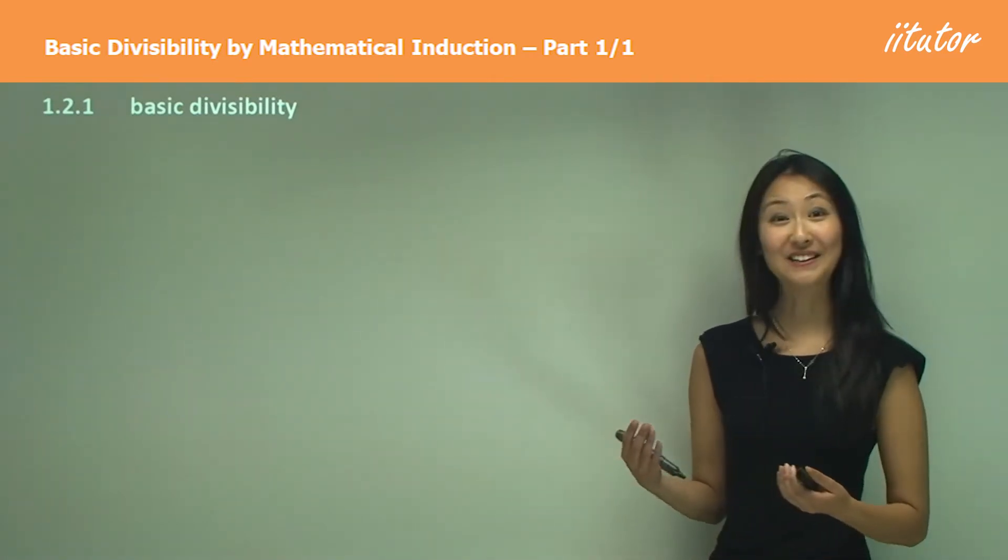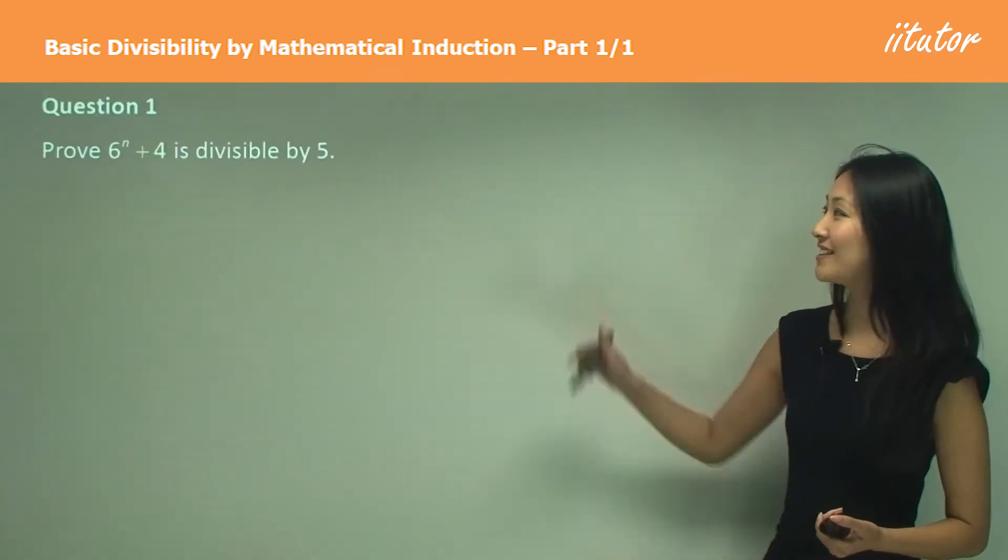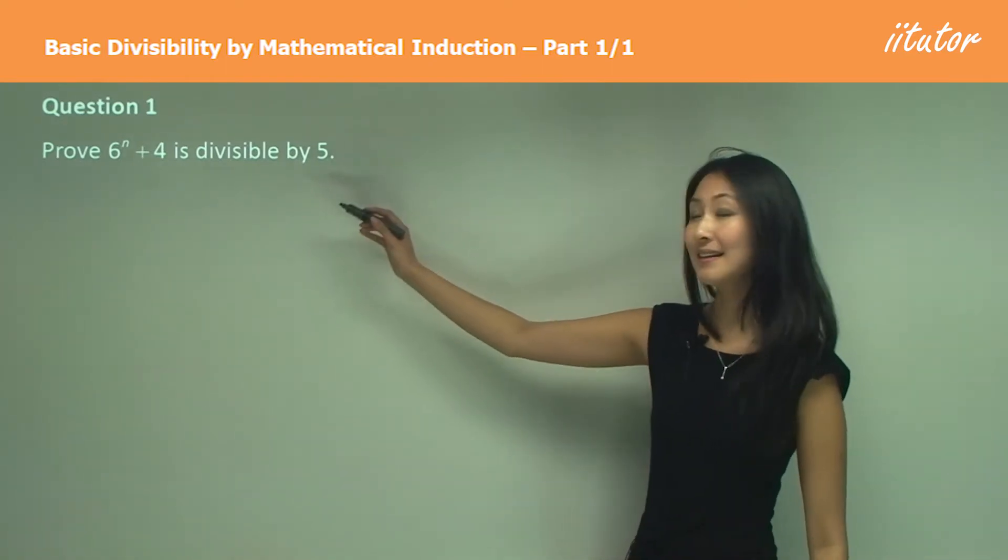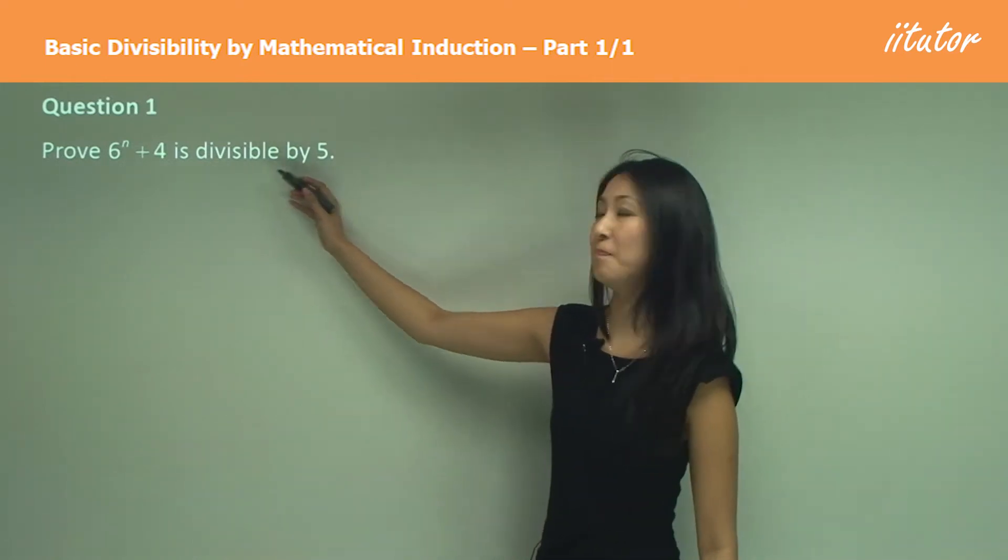The best way to learn this is to jump straight into a question, and that's what we're going to do now. So let's jump straight into question one. In question one we want to prove that 6 to the power of n plus 4 is divisible by 5.